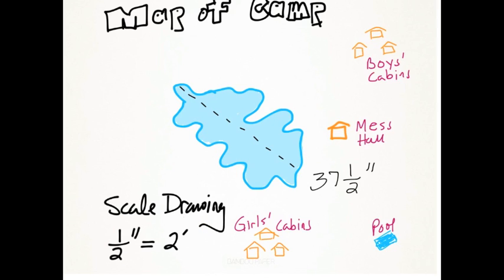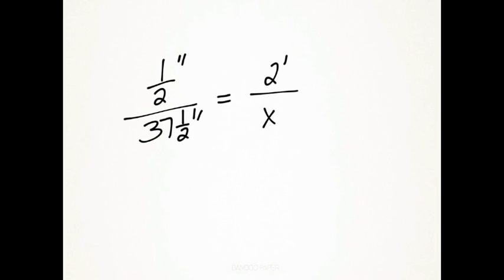Now it's time to do some math. Here I've created a proportion. One half inch equals two feet. And what I'm trying to do is find thirty seven and a half inches. So we'll solve this the way we typically solve a proportion, and that is to cross multiply.